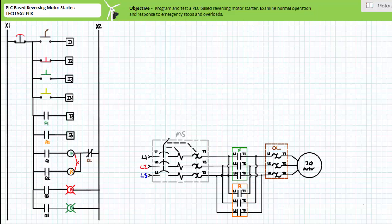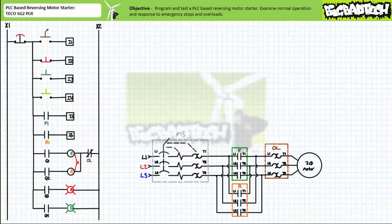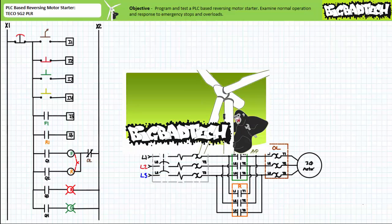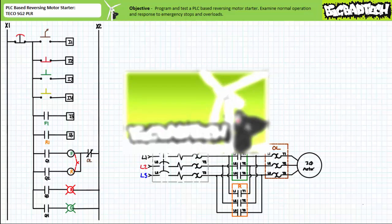We'll examine the behavior during normal operation and its response to emergency stops and overloads. This lecture is predicated on the assumption that viewers have watched the commissioning a PLC system featuring the TECO SG2 PLR lecture available at the Big Bad Tech channel. If you haven't watched this lecture yet or want to recall its contents, please take the time to do so now.